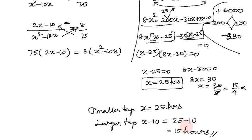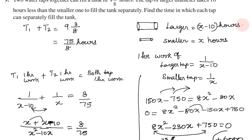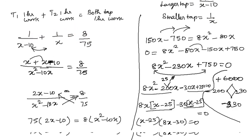So the concept: this is a work-based problem. You need to convert to unit work — divide to get one hour work, then add the unit works and equate. Set up 1 by x minus 10 plus 1 by x equals 8 by 75, then frame and solve the quadratic equation.